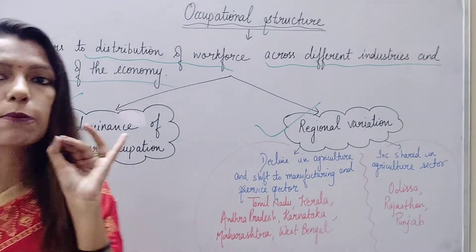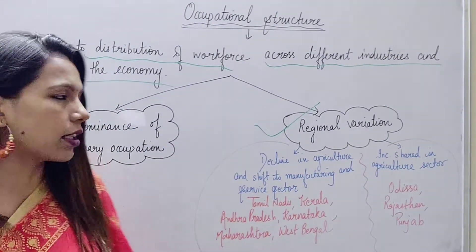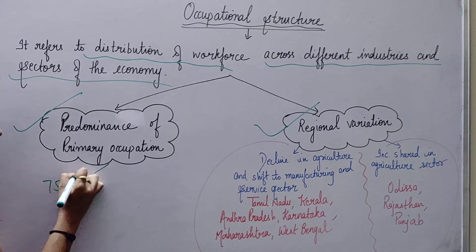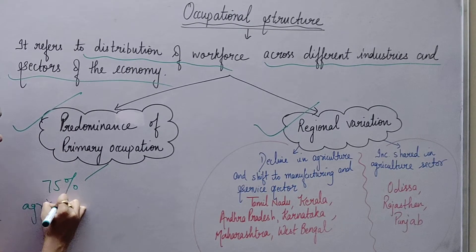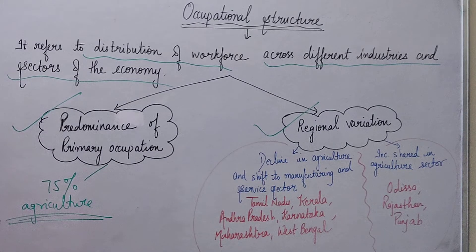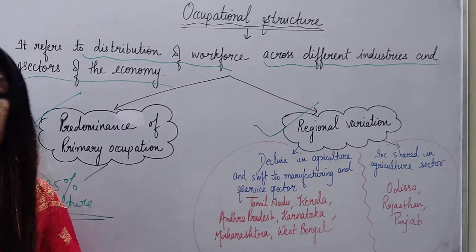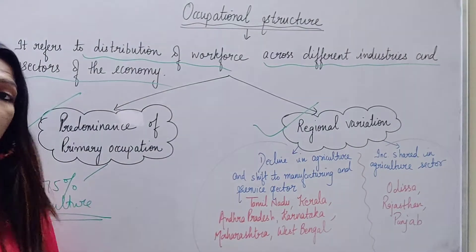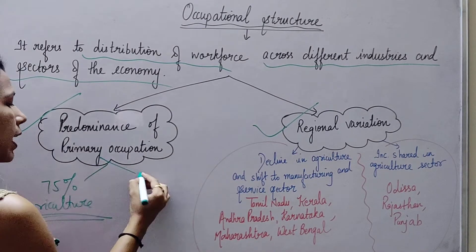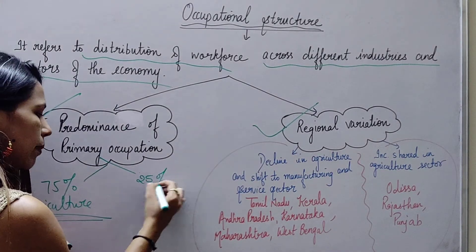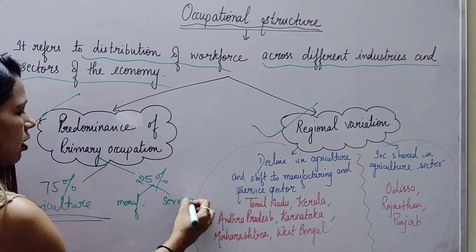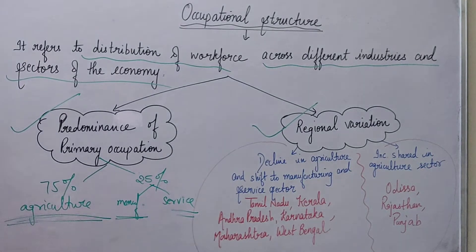Primary Occupation means the Primary Sector. Approximately 75% of the population was engaged in agriculture. That means our agrarian economy had about three-fourths of the country's population — 75% of the workforce — employed in agriculture. The remaining approximately 25% of the workforce was employed in the manufacturing sector and service sector.